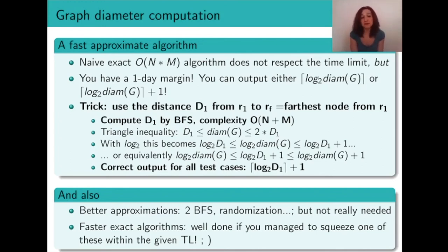And by triangle inequality we can show that this stands within a factor 2 from the real diameter, and the nice thing is that by applying log₂ this 2 factor becomes a mere plus 1. So if you output the ceiling of log₂ of d1 plus 1, you are guaranteed to be correct for all the test cases.